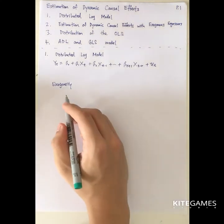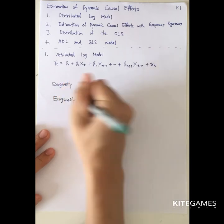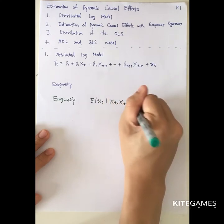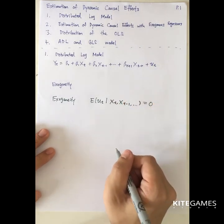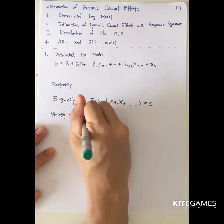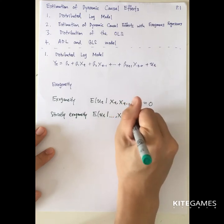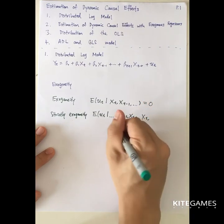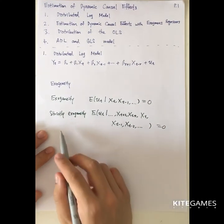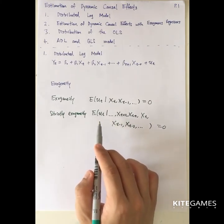You need to know two exogeneity concepts. One is called exogeneity, which means the expected value of the error term ut, given xt, xt-1 up to all the horizon of x, is zero. The other concept is called strictly exogeneity: the expected value of ut given all values — xt+2, xt+1, xt, xt-1, xt-2, up to all x — is zero. Strictly exogeneity is much stronger because it also assumes that future x does not affect the present error terms.